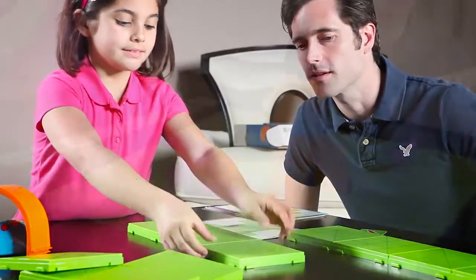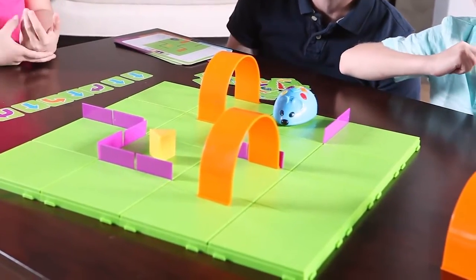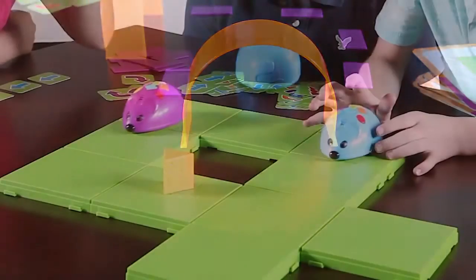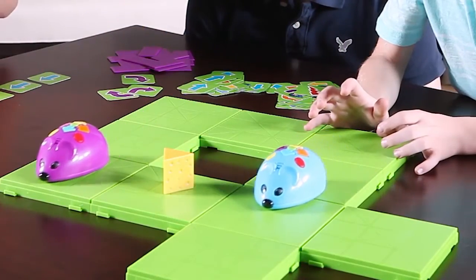Want more challenge? Don't use the coding cards or try building your own maze. The possibilities are endless since Colby can be programmed up to 40 steps and features two speeds, perfect for the tabletop or floor.